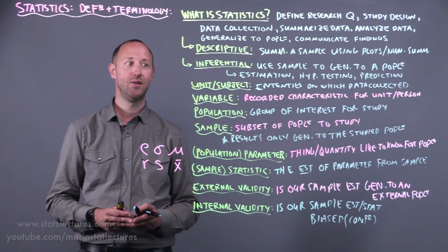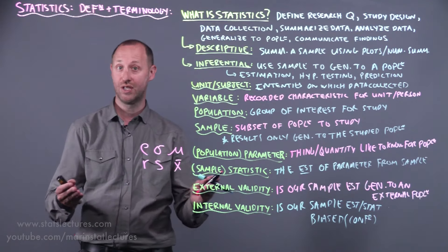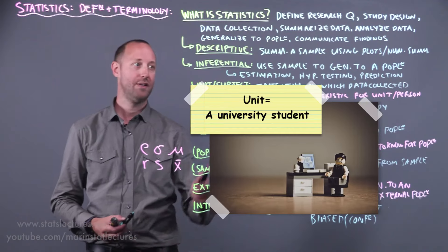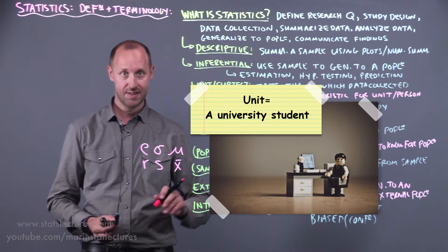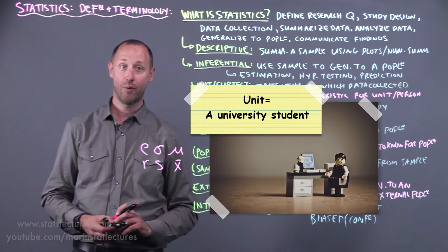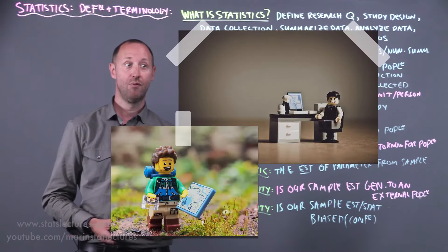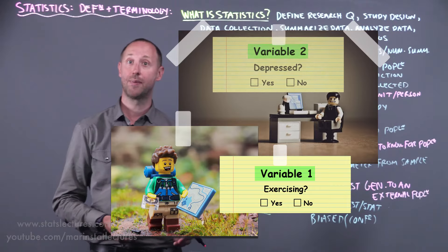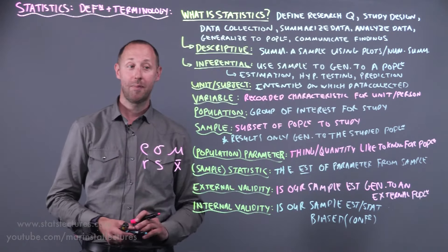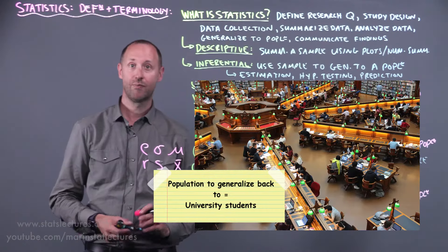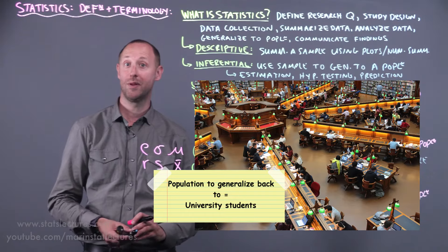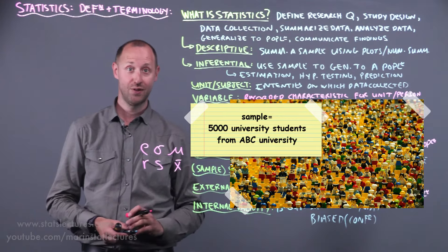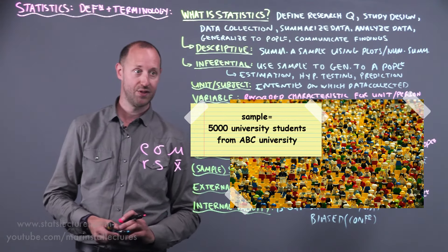Now we'd like to generalize back to the population of university students in general. So first let's think of what is our unit? Our unit is a university student, that's the unit or individual we're recording data for. What are the variables we have? We recorded the variable of exercise, yes or no, and depression, yes or no. Who's the population that we'd like to generalize to? We'd like to generalize back to the population of university students. What's our sample? Our sample is the 5,000 students from this particular university that we've surveyed.